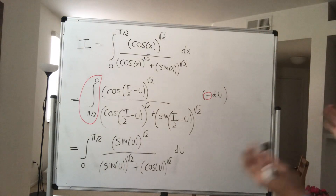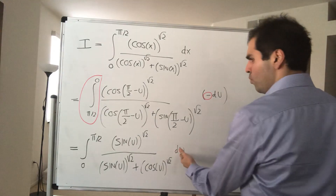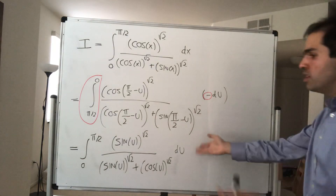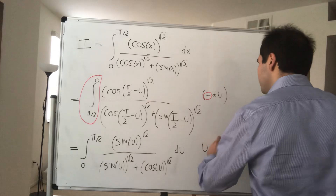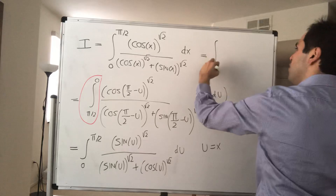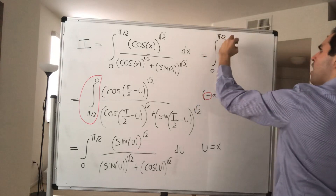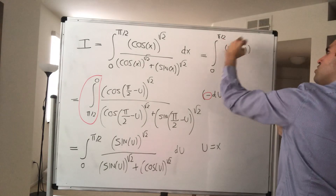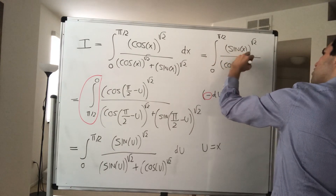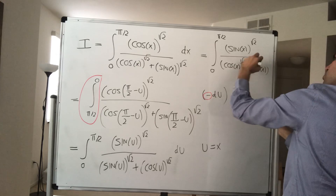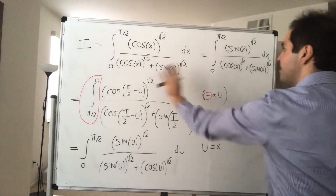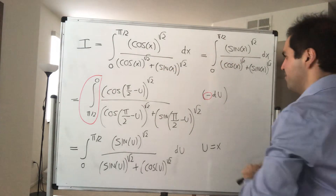Once you integrate with respect to u, you can rename u back to x. You find that I is also equal to the integral from 0 to π/2 of sine of x to the square root of 2, over cosine of x to the square root of 2 plus sine of x to the square root of 2, dx. So interestingly, it's the same integral but with cosine and sine swapped.